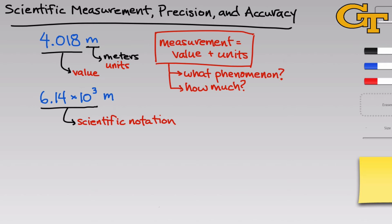We start with an initial factor that is between 1 and 10, and we multiply that by some power of 10. So the notation written here tells us to take the number 6.14 and multiply it by 10 to the third power, or 1,000, to arrive at the final measurement, which is 6,140.